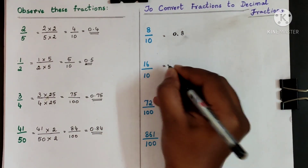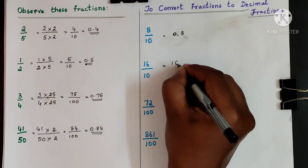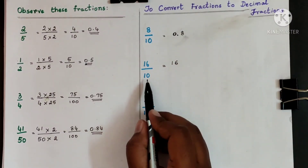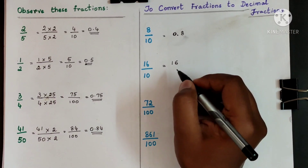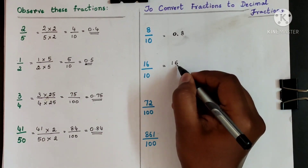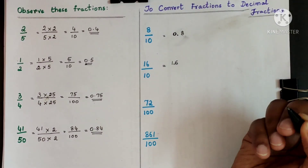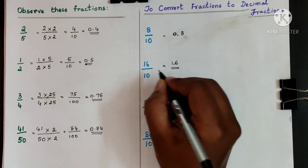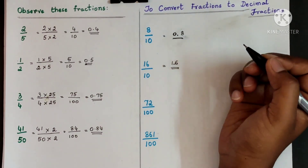Same thing — you have 16, write 1 and 6. Since you have 1 zero in the denominator, after 1 digit from the right, put a decimal point. So 16 tenths is written as 1.6.